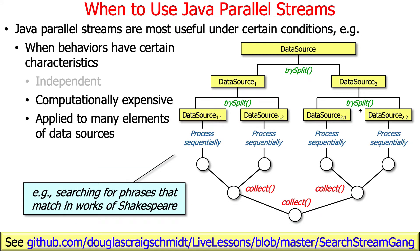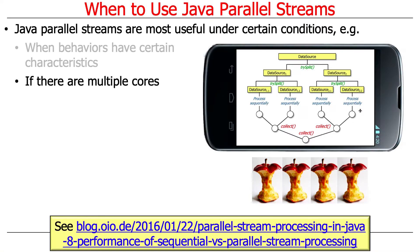Searching for phrases that match in the works of Shakespeare is fairly computationally intensive, and there are potentially lots of phrases, lots of input, lots of works of Shakespeare — so you're probably going to get a win. Another obvious but important point: if you have many cores, you'll benefit. If you only have a single-core machine, you're probably not going to get much performance boost from parallel processing, because there's only one thing to do.